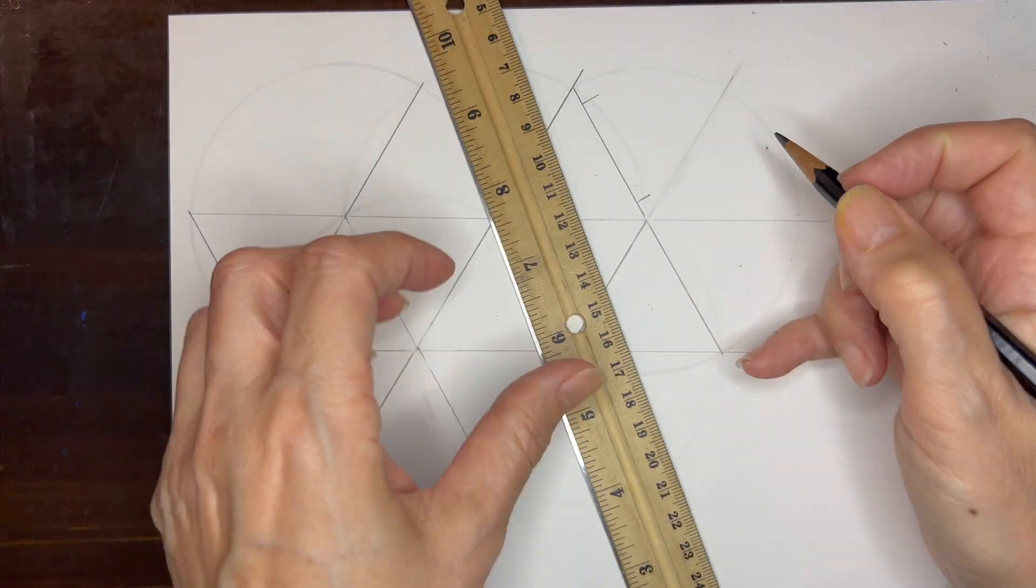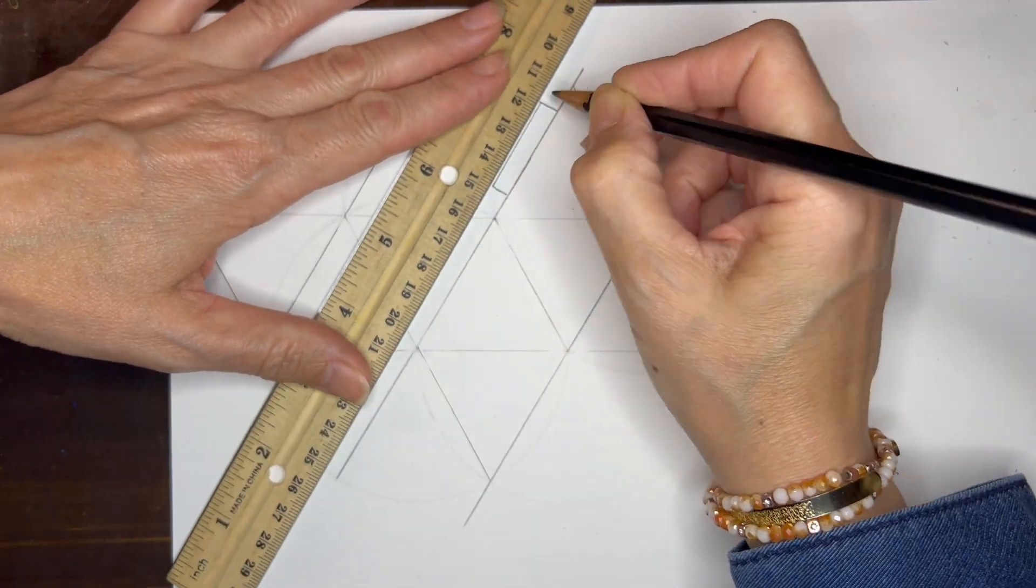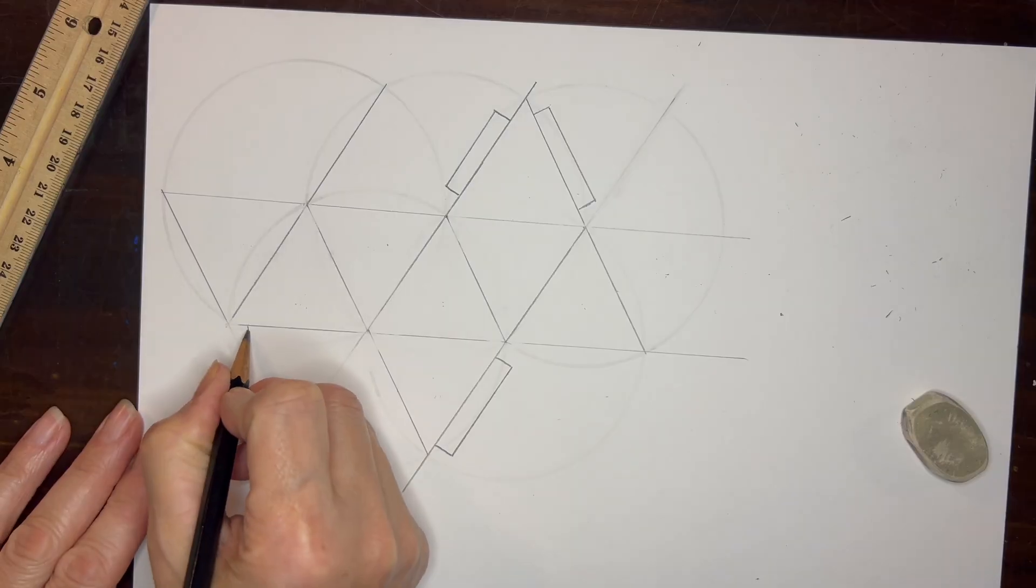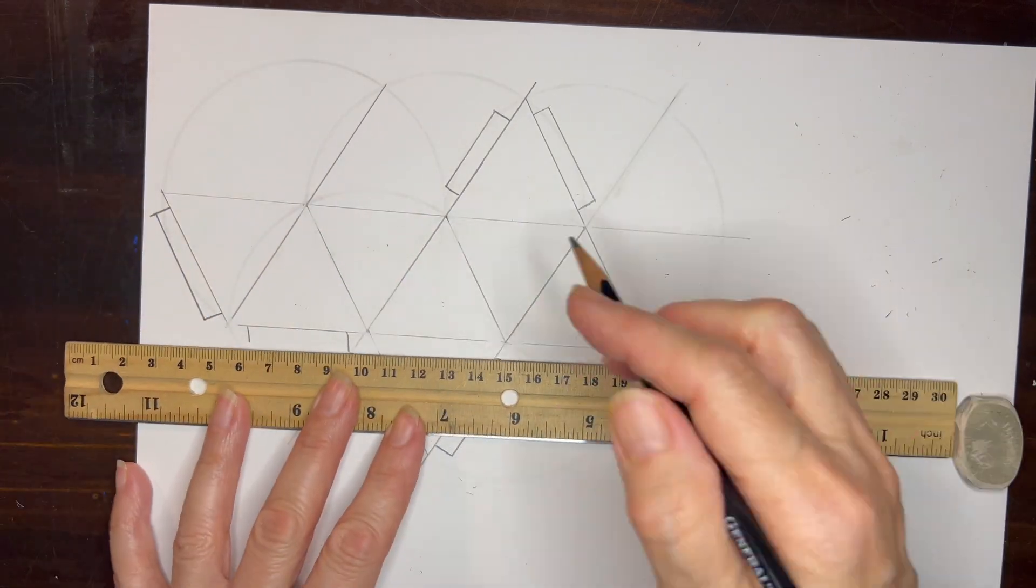So now we have our eight triangles and we want to make these little tabs so that we can actually assemble this shape and use a little bit of double stick tape so that we can assemble this without seeing any tape lines on the outside.